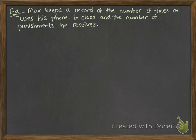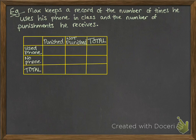All right, let's look at another example. Max keeps a record of the number of times he uses his phone in class and the number of punishments he receives. And it looks like this. So we're going to do a table, like you've done before. And he fills in these details. These are lessons where he used his phone and received some sort of punishment. And there were some lessons where he wasn't using his phone, but he received a punishment for something else, and lessons where he wasn't punished.